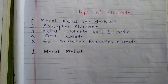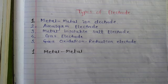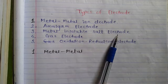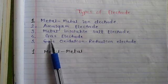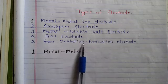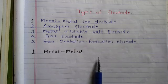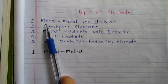In this session, we discuss the topic of types of electrodes, which is a part of electrochemistry. There are five types of electrodes: first is metal-metal ion electrode, second is amalgam electrode, third is metal insoluble salt electrode, fourth is a gas electrode, and fifth is an oxidation-reduction electrode.